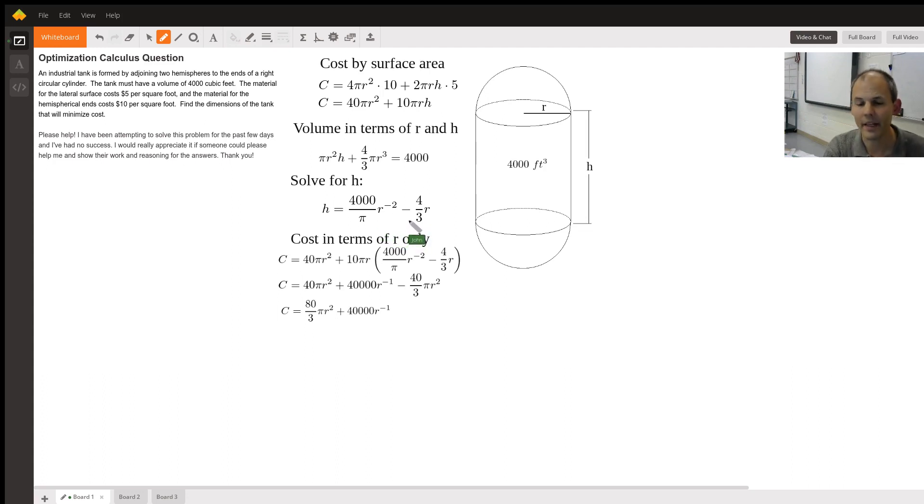Now what I can do is take my cost function, which is in terms of r and h. I can plug in this for h, and I get all this here, which I can then distribute. And you can pause this video as much as you need and try and work this out on your own. I'm pretty sure this has to be the right thing, because I've actually verified this in my graphing calculator as well.